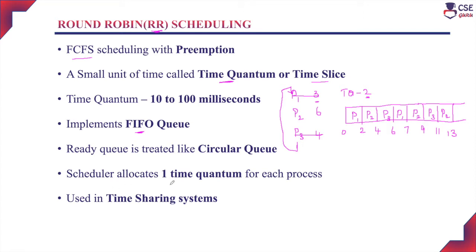The scheduler allocates one time quantum for each process. For example, if the time quantum is 2 milliseconds, each process executes for 2 milliseconds — this is considered one time quantum. If the time quantum is 3 milliseconds, each process executes for 3 milliseconds. All processes share the CPU time equally, with no preference or priority given to any specific process — all processes are treated equally and get equal chance to execute. This makes the algorithm a fair algorithm. Since CPU time is shared equally among all processes, it is commonly used in time-sharing systems.